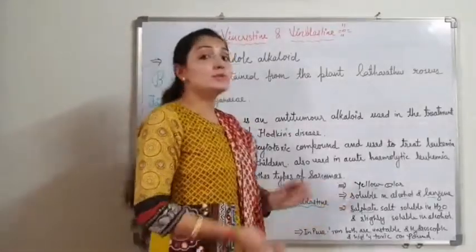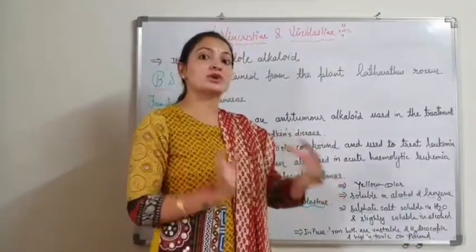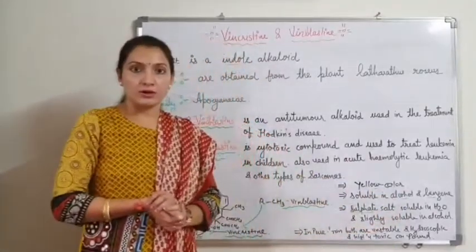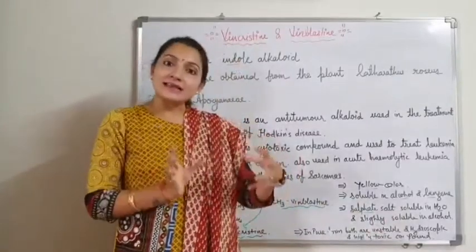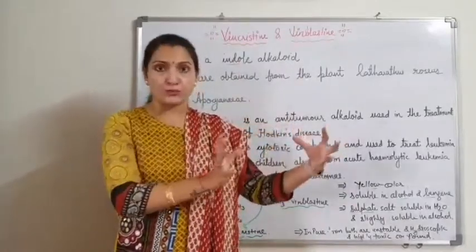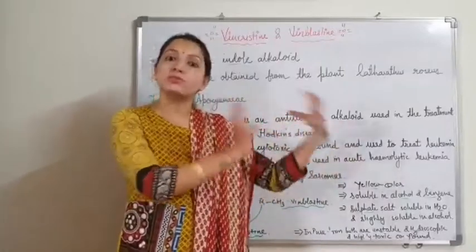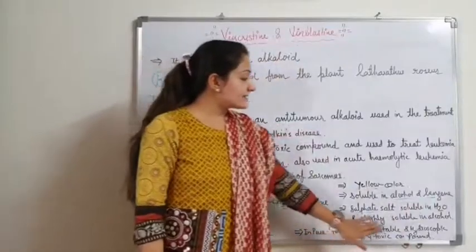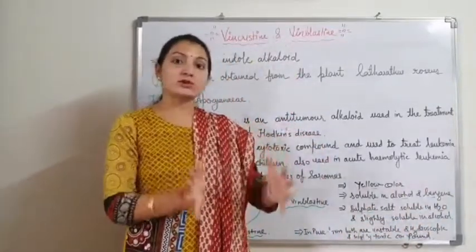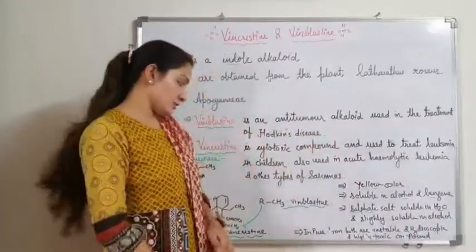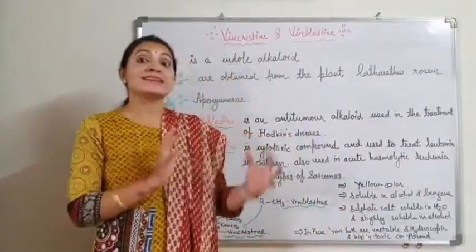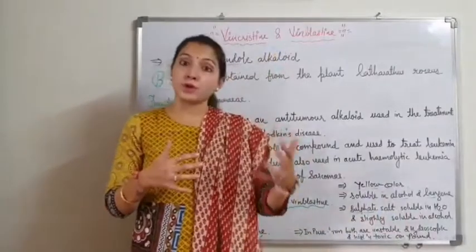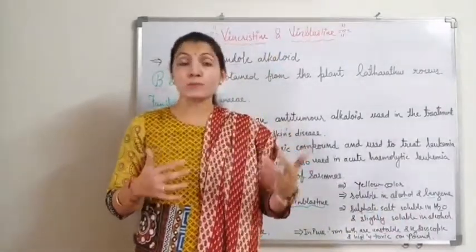They are yellow in colour, soluble in alcohol and benzene. Because alkaloids have solubility in alcohol and benzene. The sulphate salt form is soluble in water and slightly soluble in alcohol, because as we know, when alkaloids are converted into salt form, the salts are easily soluble in water. In pure form, both are unstable, hygroscopic — meaning they absorb moisture from the atmosphere — and are highly toxic compounds.